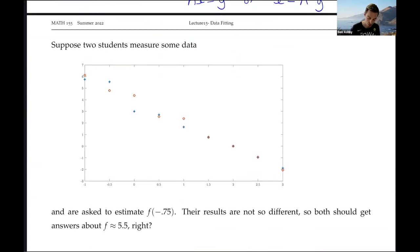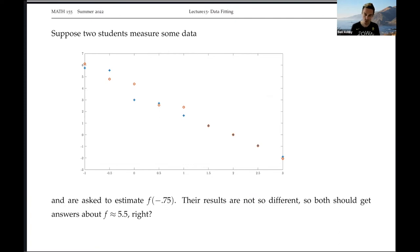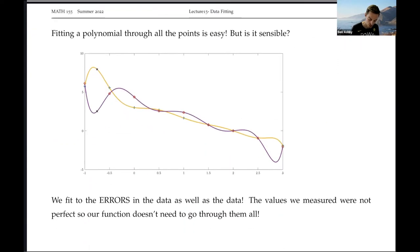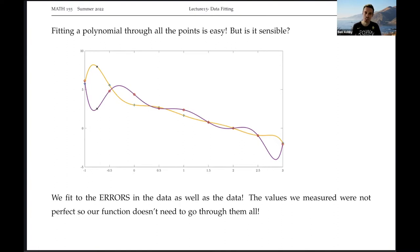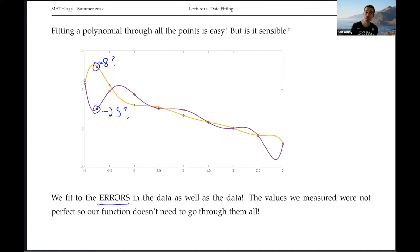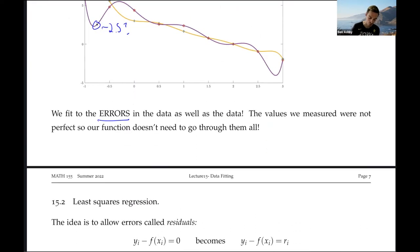But is that necessarily the right thing to do? Suppose two students measured similar data and want to estimate the point at minus 0.75. If they plot a polynomial through all their points, they get very different answers — one might estimate around 8, another around 2.5. They've overfitted their data. We have errors in our data and we don't want to overfit our model and capture too much of those errors. Instead, we want to minimize the errors using something called least squares regression.